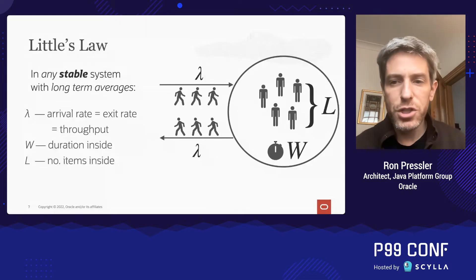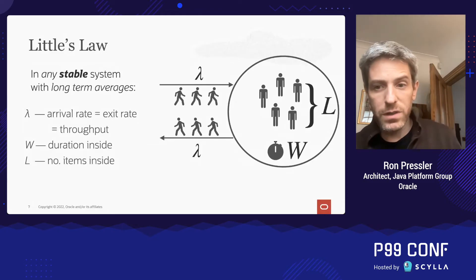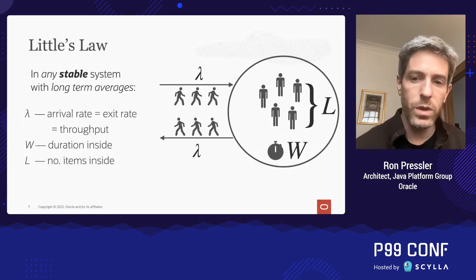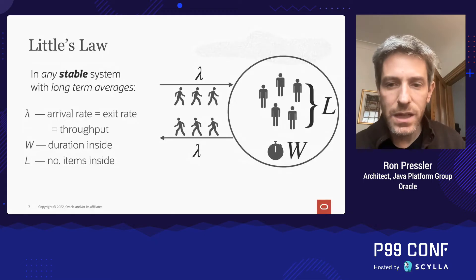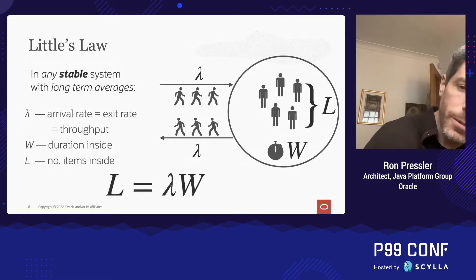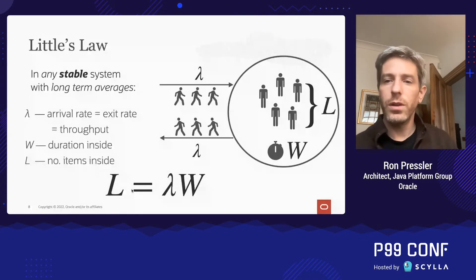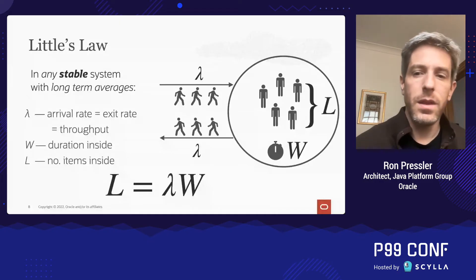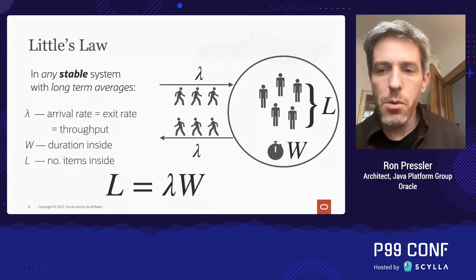W is the average duration or latency that the items spend inside the boundaries of our system. We can choose the boundaries to correspond to different kinds of latencies. L is the average number of requests that will be concurrently inside the boundaries of our system. Given those definitions, the theorem says that this equation holds: L equals lambda times W. It holds in every stable system.